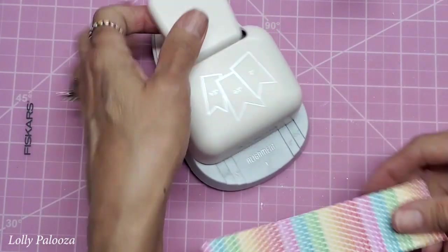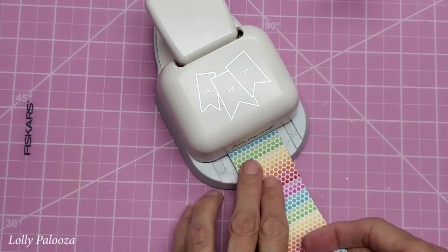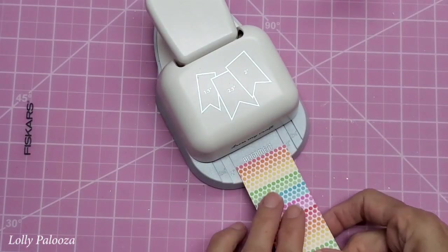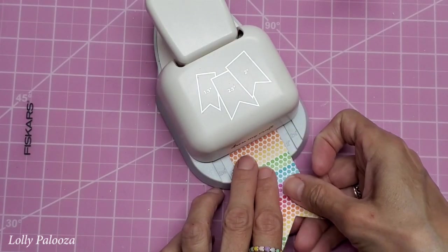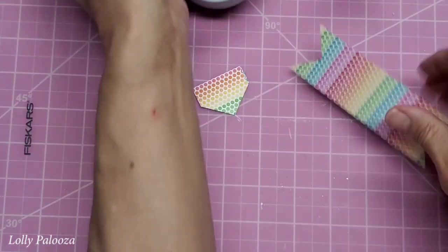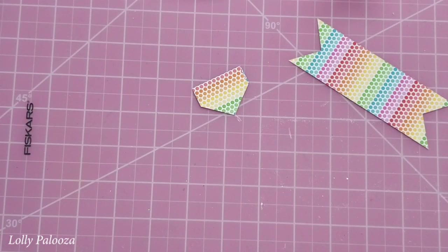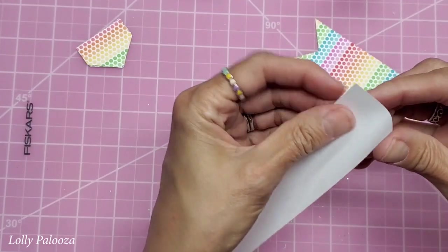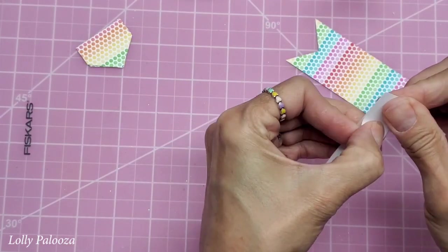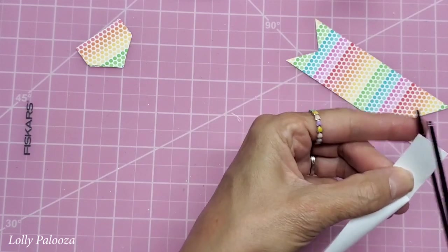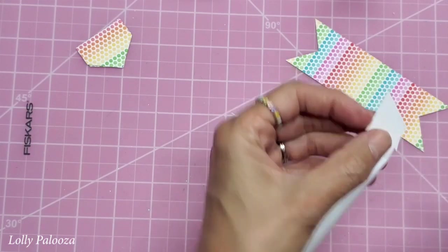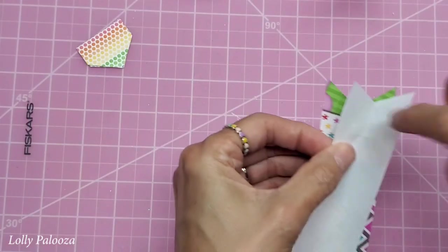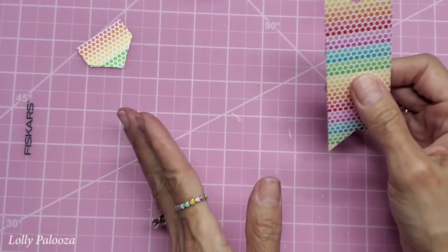I'm also using this fishtail banner by Dress My Craft, which does 1.5, 2, and 2.5 inch banner tails. And don't fret if you don't have something like this, because all you need to do, I'll show you on a scrap here. Take a scrap that's also 1.5 inch, fold it lengthwise like this, and then just cut like that. And now this becomes your template. All you have to do is trace that on both ends and cut that out so you don't have to have the punch.